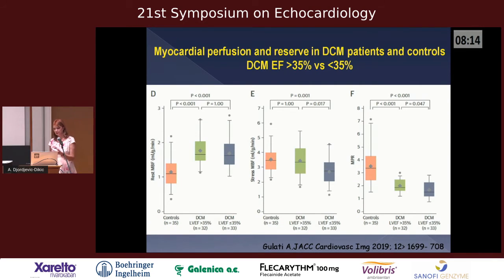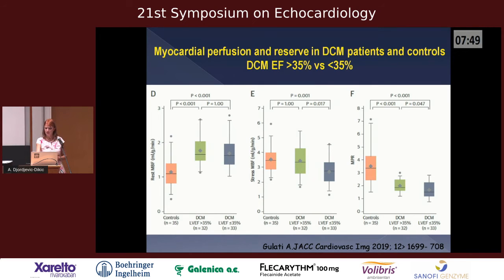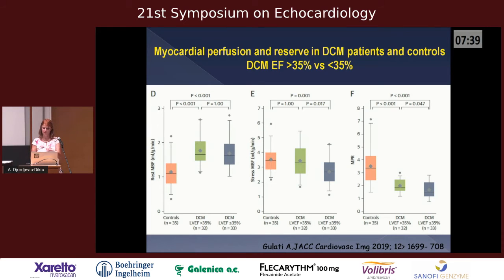They also divided dilated cardiomyopathy patients into groups with left ventricular ejection fraction above and below 35 percent. Resting flow was equal between these groups, but during stress, patients with ejection fraction less than 35 percent had lower stress flow and lower perfusion — and these are exactly the patients considered for CRT therapy.